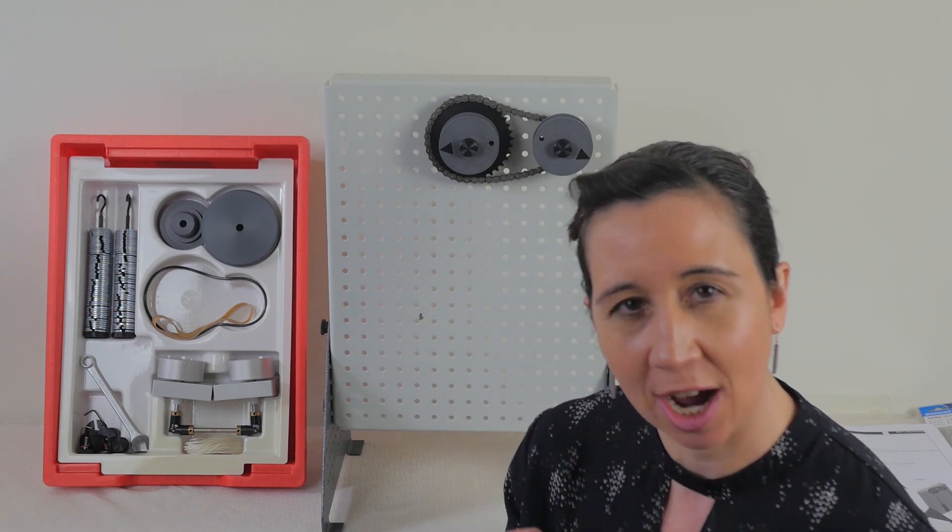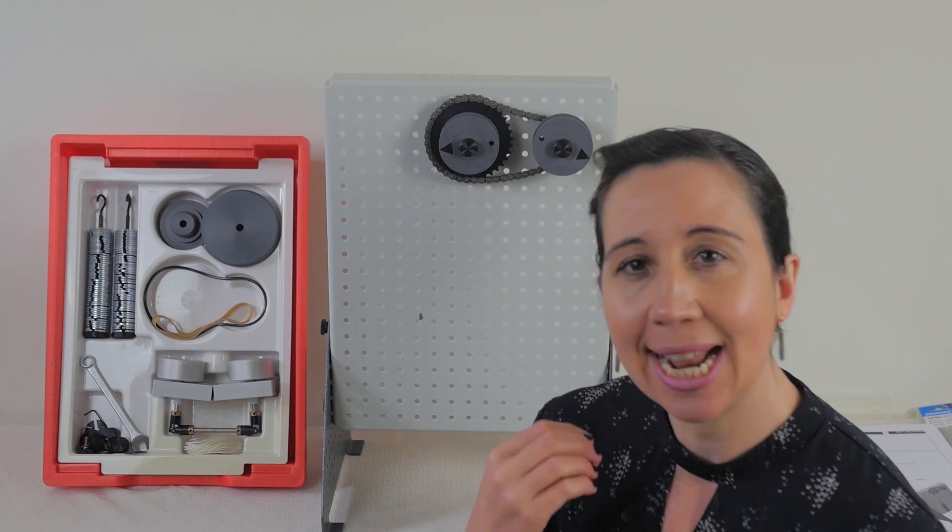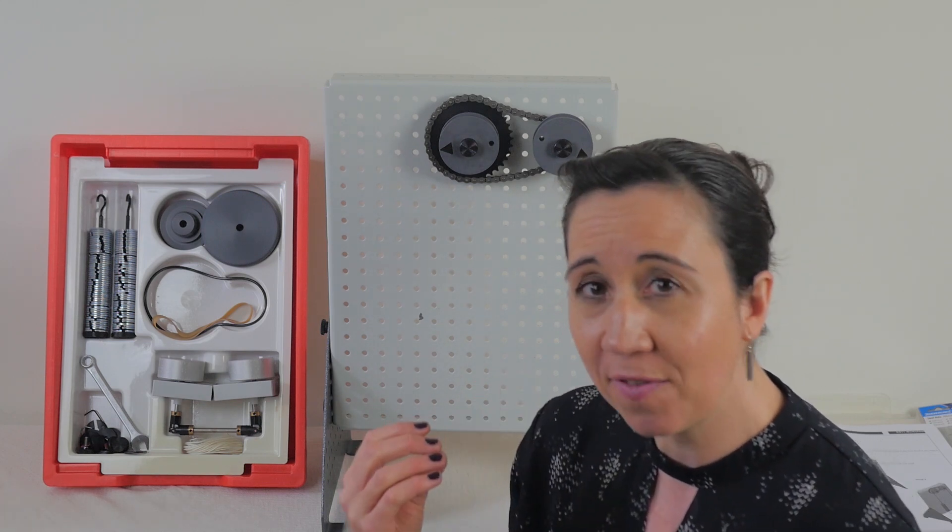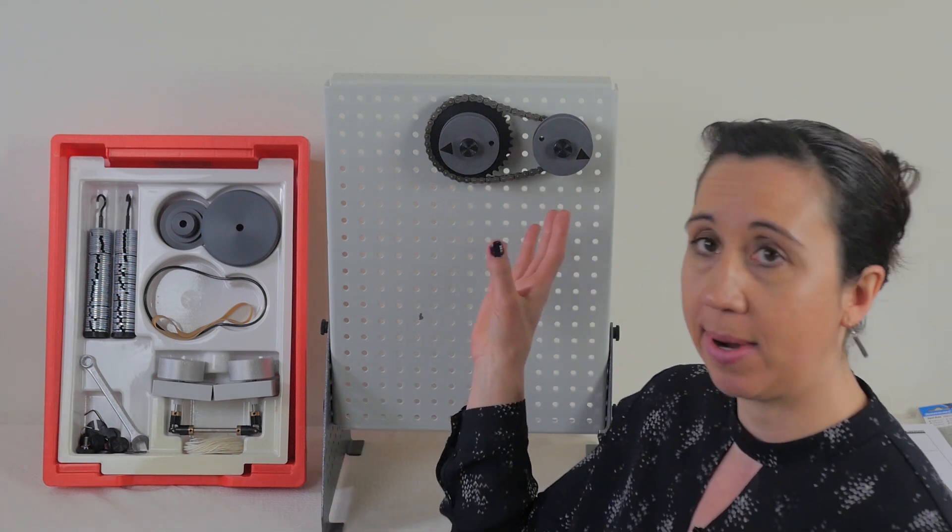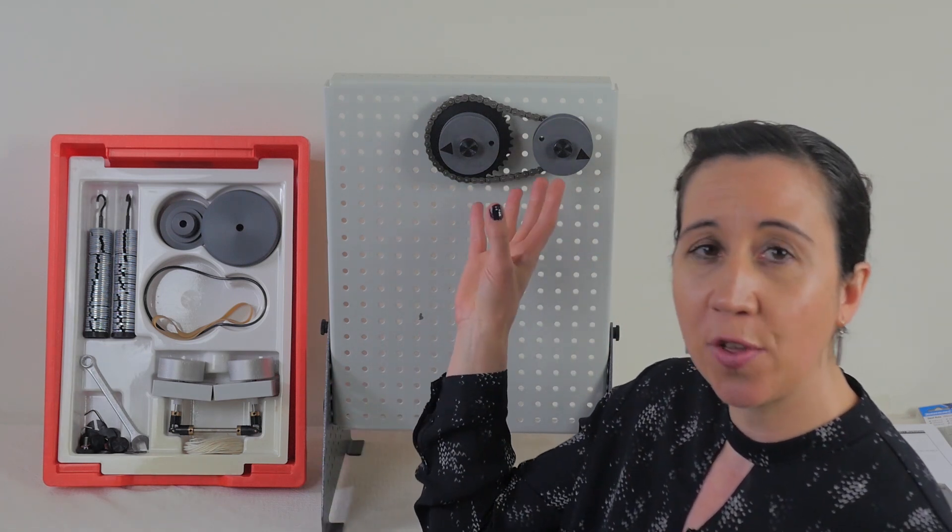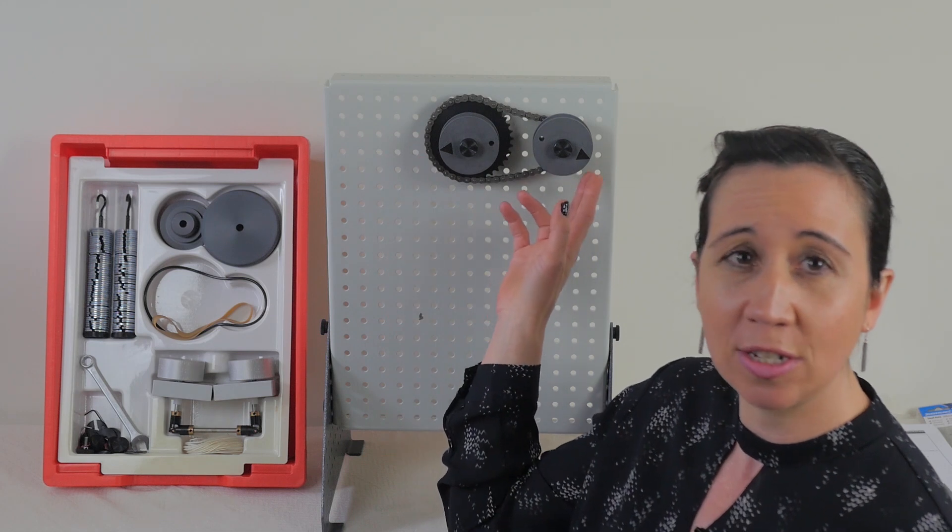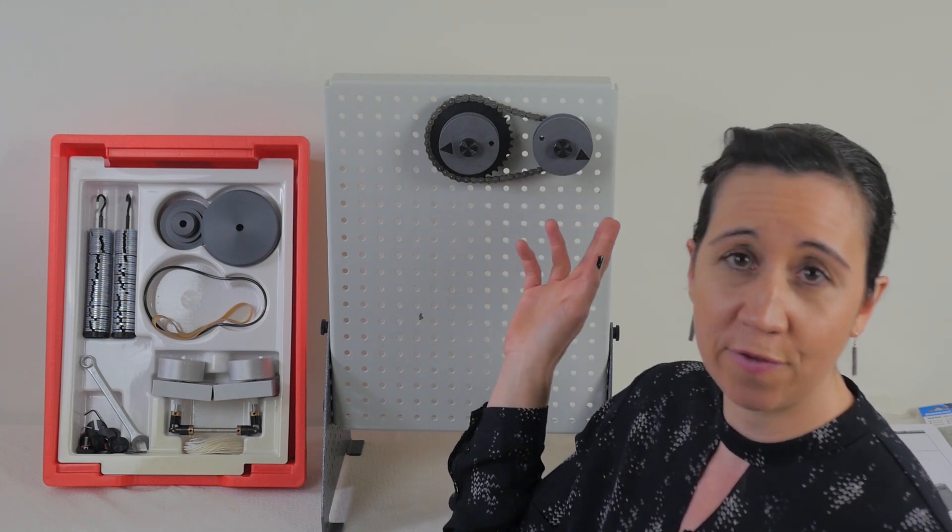The experiment in this kit aims to show that a chain drive is synchronous and allows students to find the maximum efficiency for different loads. Firstly, you set up the experiment like this with a chain on the large and small sprockets at the top of the work panel in a portrait format.